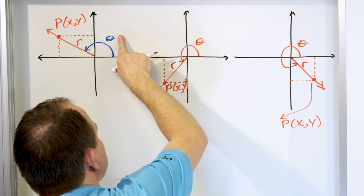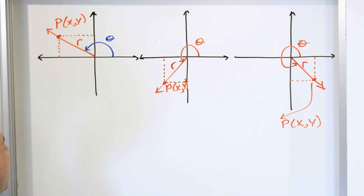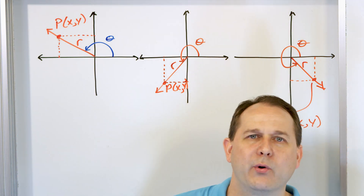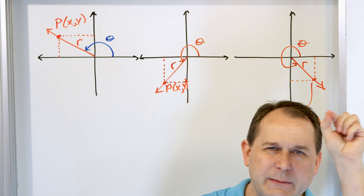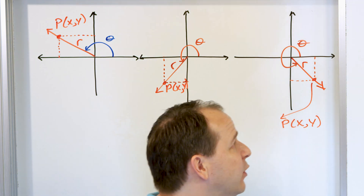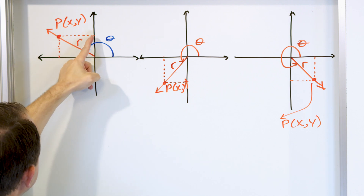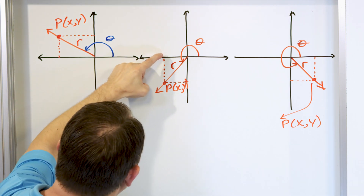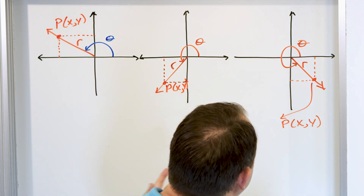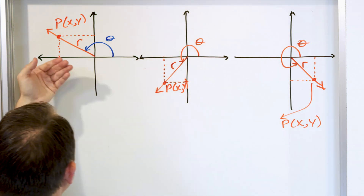In every possible angle around the unit circle, you can pick some point P. P has some X and Y coordinates. You go up to read the X coordinate and over to read the Y coordinate. It's just reading the X, Y coordinates of point P in all cases.